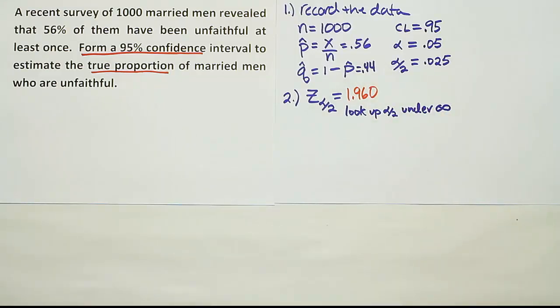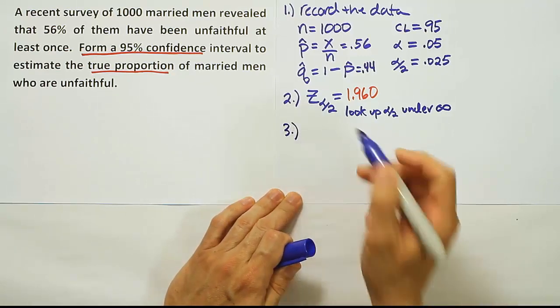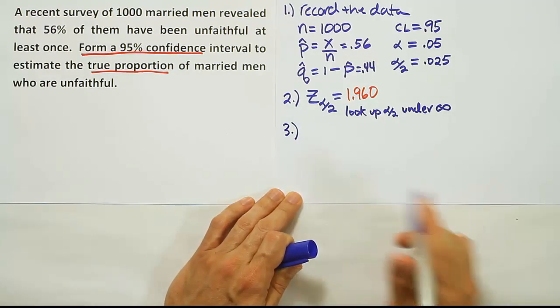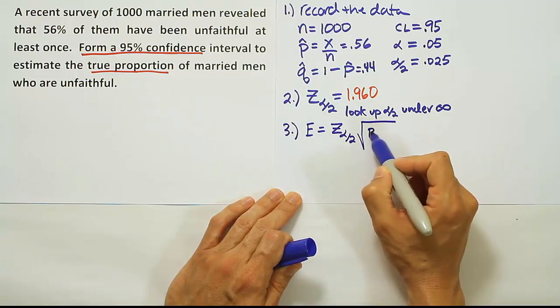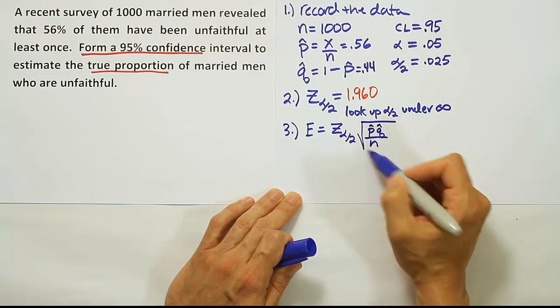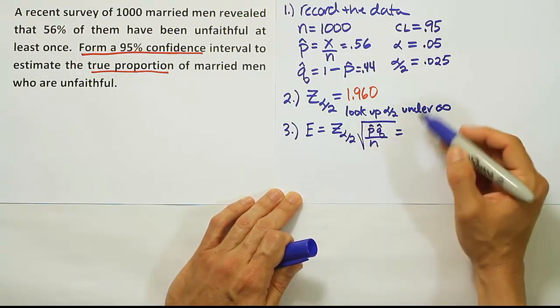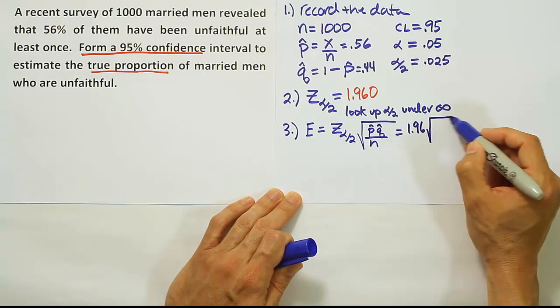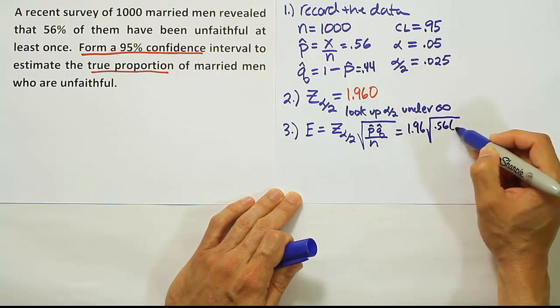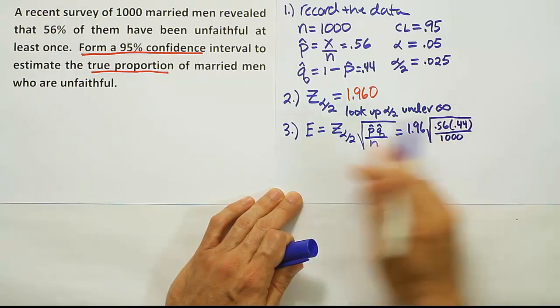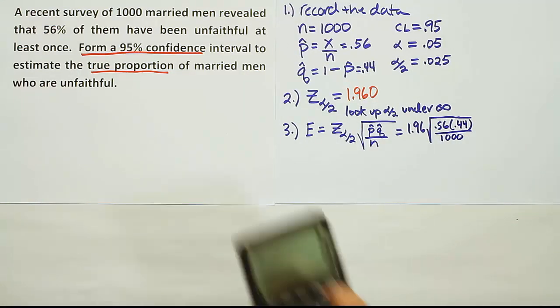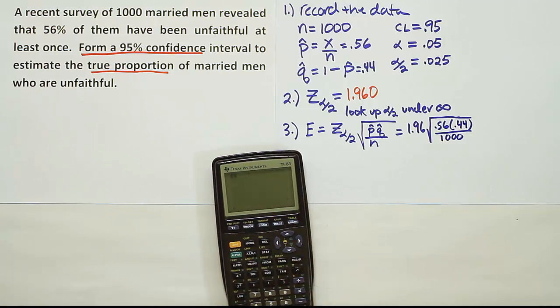The table value we found is 1.960. Step 3 is our margin of error. Since this is a confidence interval for proportion, we have a different formula: z alpha divided by 2 times the square root of p-hat times q-hat divided by n. That's 1.96 times the square root of 0.56 times 0.44 divided by 1,000.